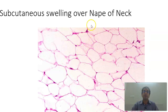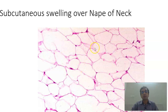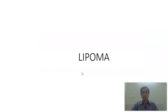A very common slide: subcutaneous swelling over the nape of neck. If you have a swelling over the nape of neck and in the microscope it is just adipose tissue, it is a lipoma. Lipoma is a well-encapsulated lesion with mature adipose tissue lobules, separated by delicate fibrovascular septa.